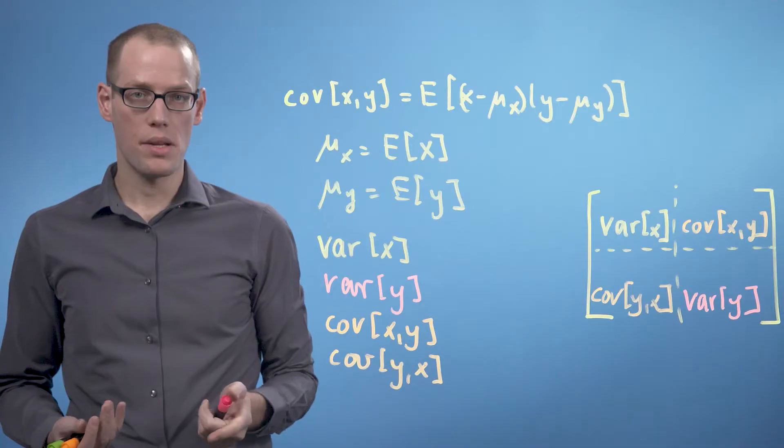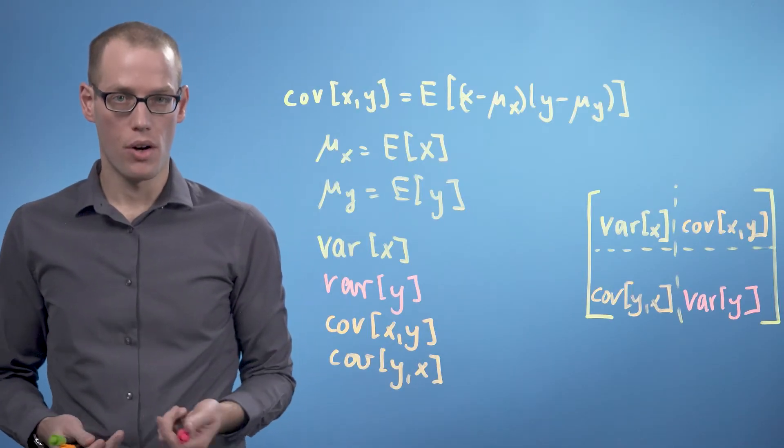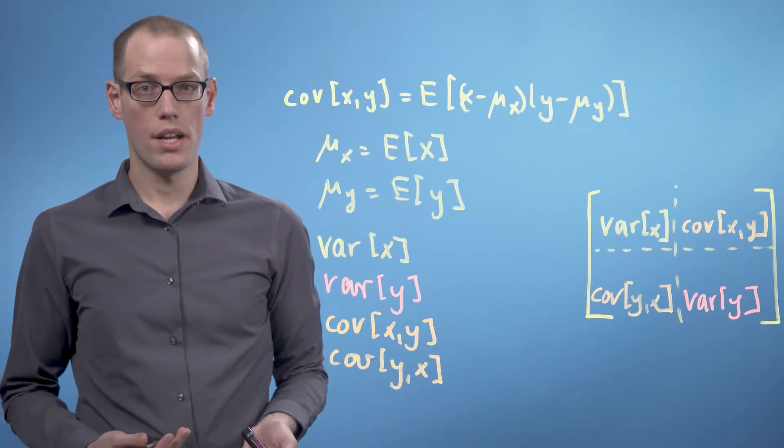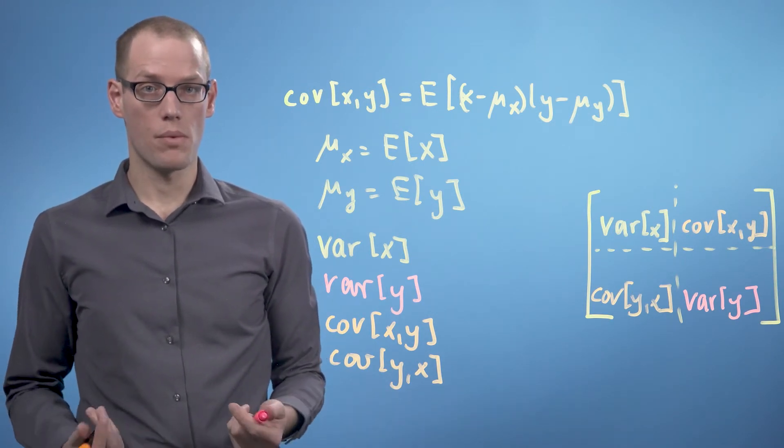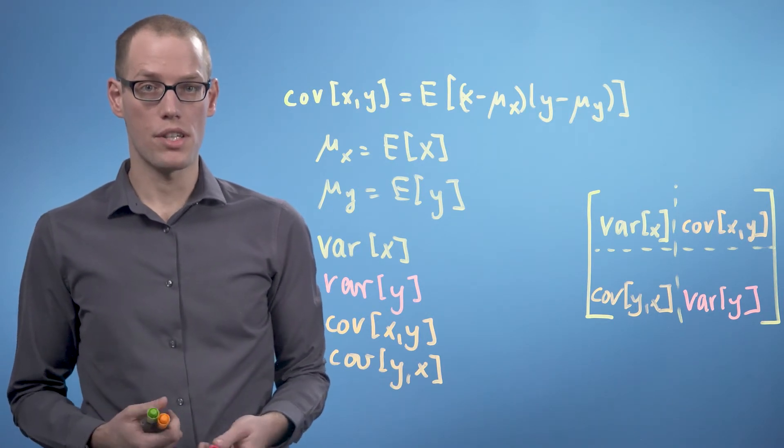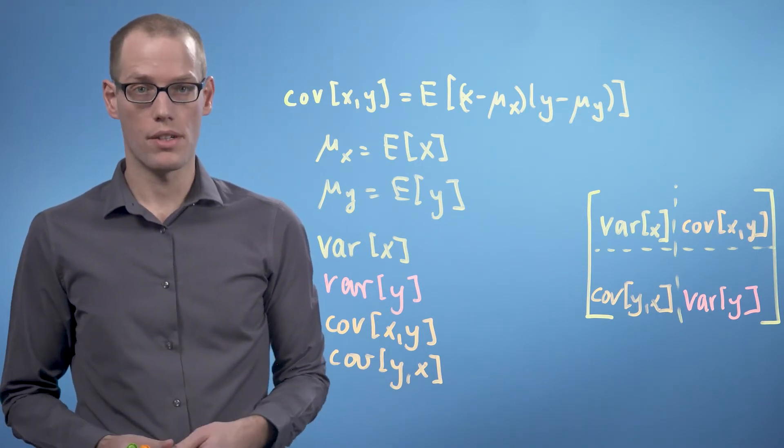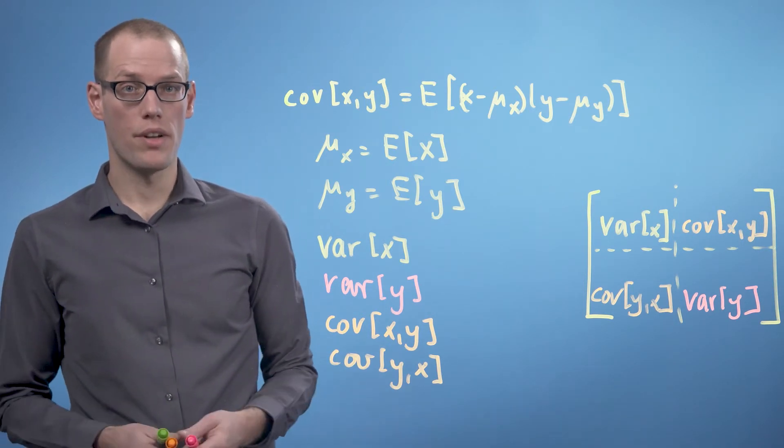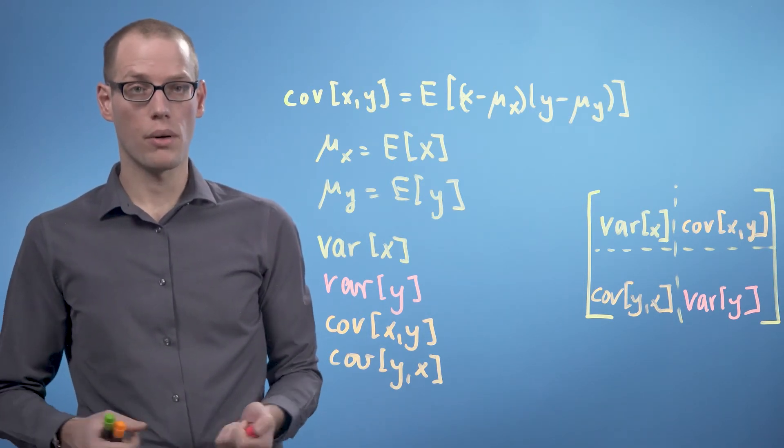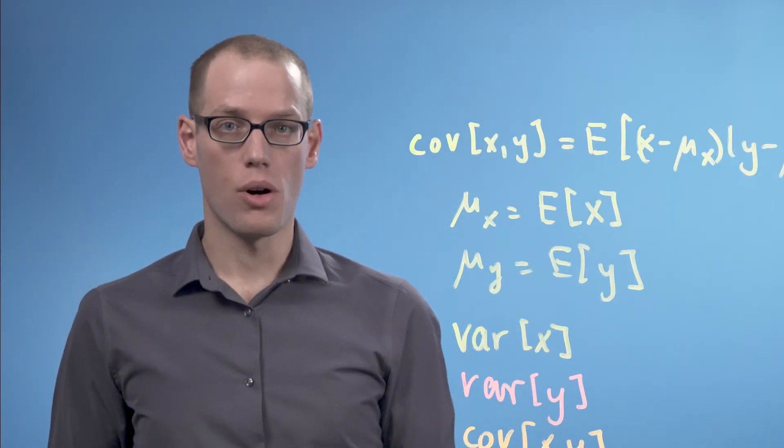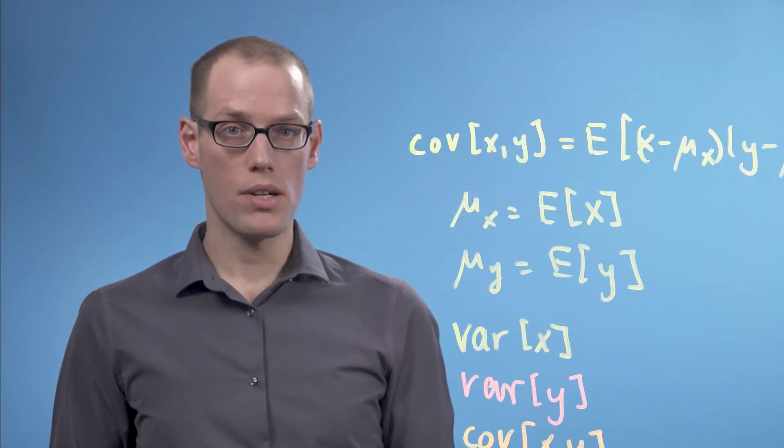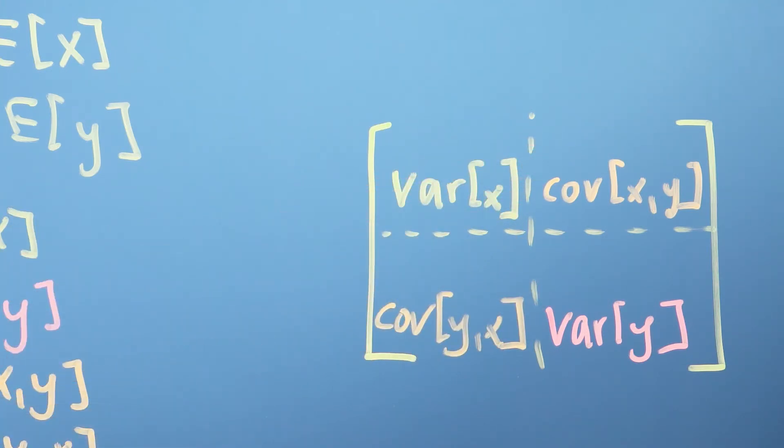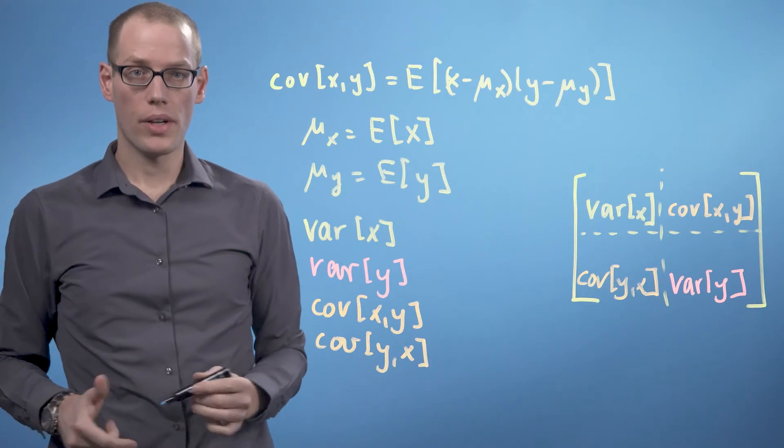If the covariance between x and y is positive, then on average the y value increases if we increase x. If the covariance is negative, then the y value decreases if we increase x. If the covariance is zero, then x and y are uncorrelated. The covariance matrix is always a symmetric positive definite matrix with the variances on the diagonal and the covariances on the off-diagonal.